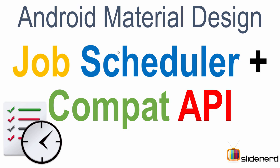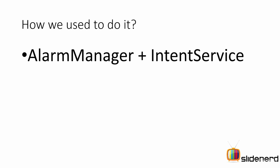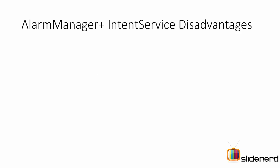So let's get started. Fetch the list of the latest movies from the Rotten Tomatoes API every 24 hours or every one hour. How did we do that so far? We had Alarm Manager plus Intent Service, or we used to have the Sync Adapter.